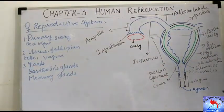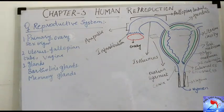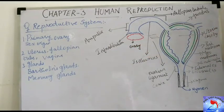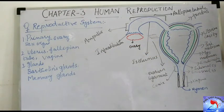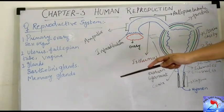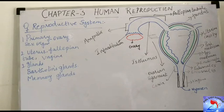Having seen the male reproductive system, we now look at the female reproductive system. The primary sex organ is the ovary, and the secondary sex organs include the uterus, fallopian tube, and vagina. The glands present are the Bartholin gland and the mammary gland. The Bartholin gland is analogous to the Cowper's gland in the male reproductive system and secretes proteins that act as lubricants, while the mammary gland helps in milk production during lactation.